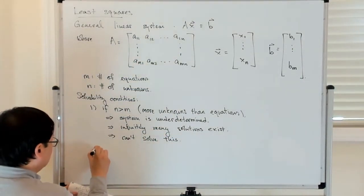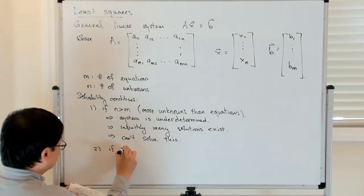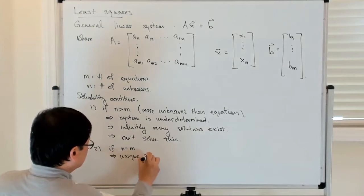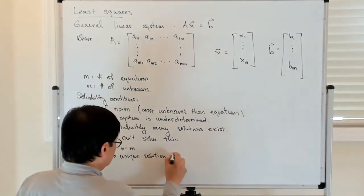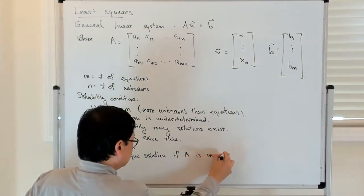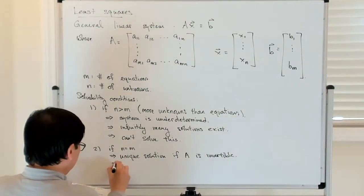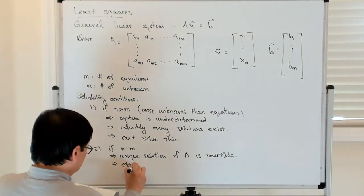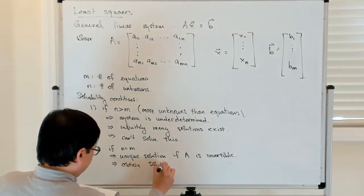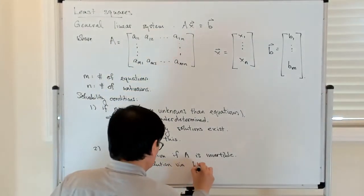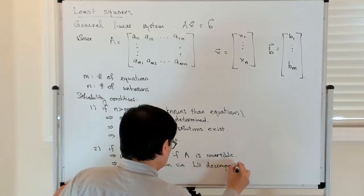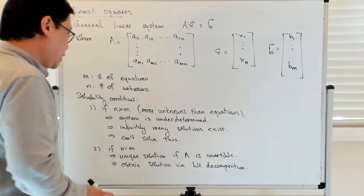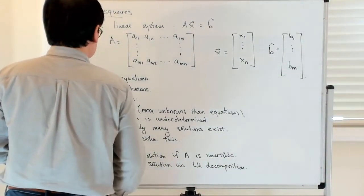Most of what we've seen so far has been the case where n is equal to m. Then, as you know, there is a unique solution if the matrix A is invertible. One way to approach this is to obtain the solution using LU decomposition, possibly with pivoting — because even if A is invertible, it's not always the case that you can do LU without some sort of pivoting.